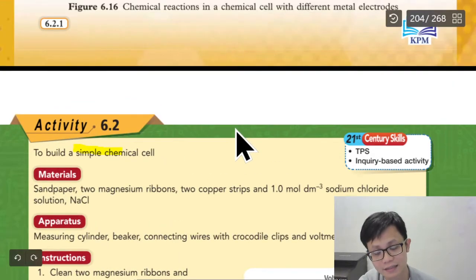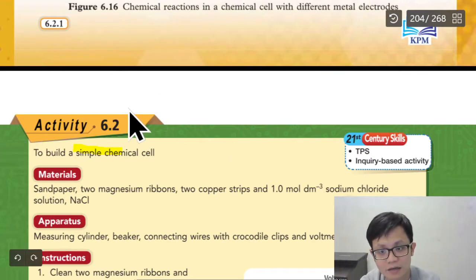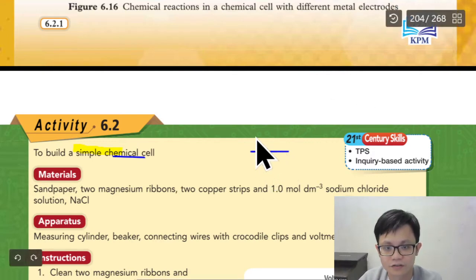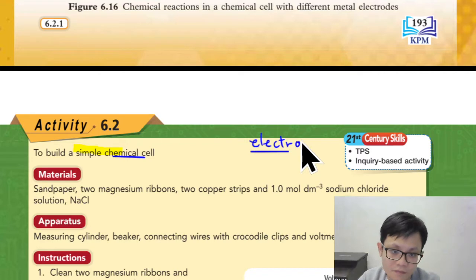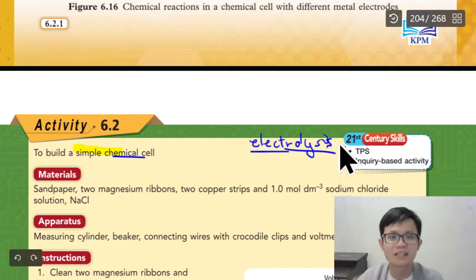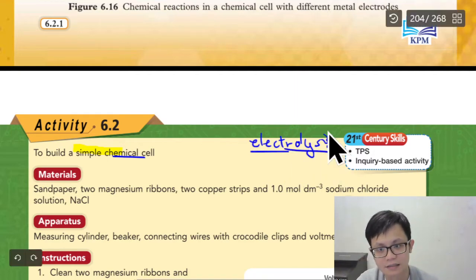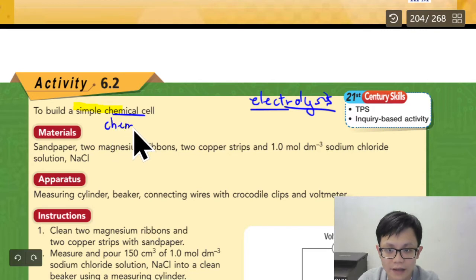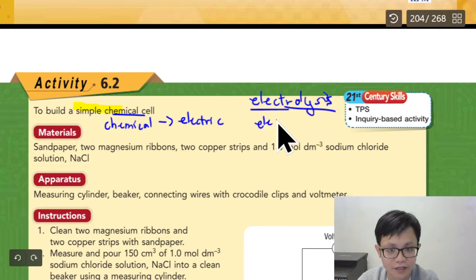We already learned about chemical cell, simple chemical cell, and electrolysis. You need to know the difference. For simple chemical cell, we use chemical energy to convert it to electric energy. And for electrolysis, it is using electric to convert it to chemical energy.